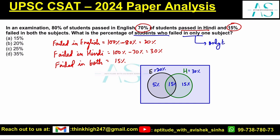Only English: 5%, only Hindi: 15%. So the total percentage of students who failed in only one subject is 5% + 15% = 20%. Option B seems to be the correct answer.